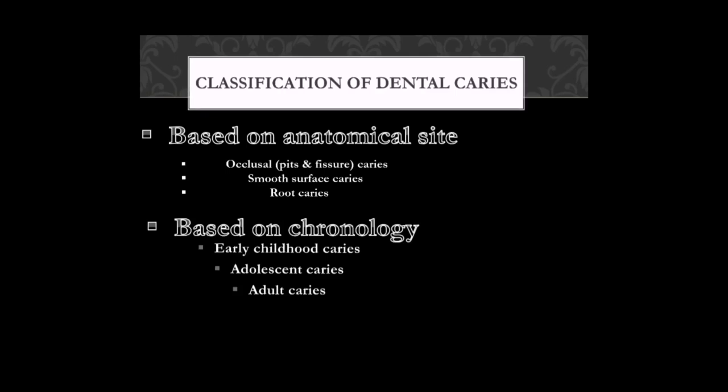Classification of dental caries based on anatomical sites includes three main types: occlusal caries, also known as pits and fissure caries; smooth surface caries; and root caries. Based on chronology, we have early childhood caries, adolescent caries, and adult caries.